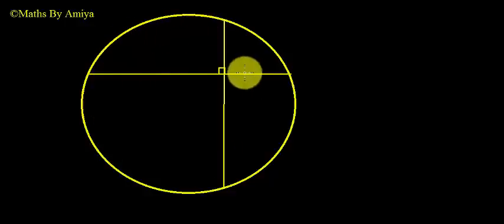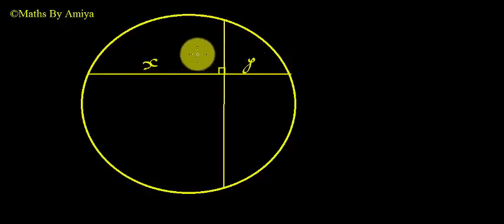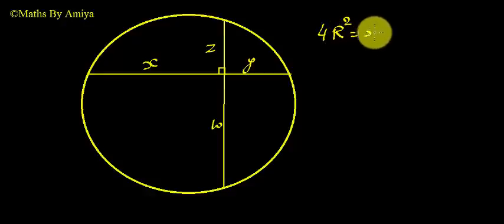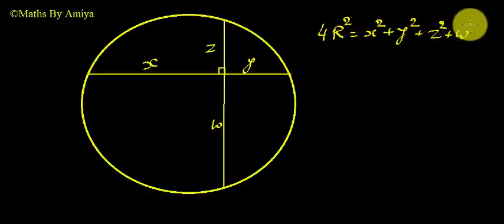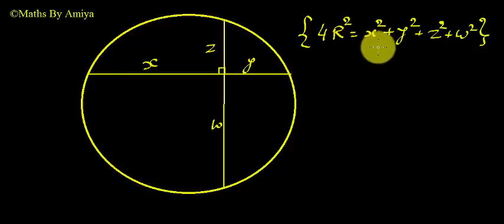We have a circle and two chords which are mutually perpendicular to each other. We have a formula: if this chord part is x, this part is y, this part is z, and this part is w, and the radius is r, then our concept is 4r² = x² + y² + z² + w². This is our outcome.